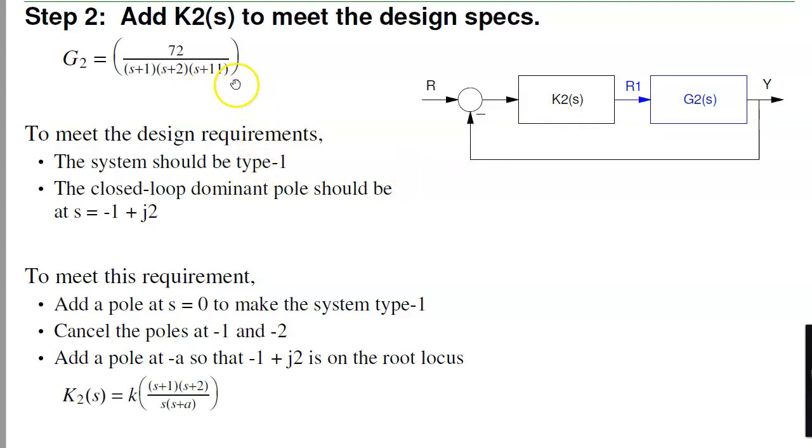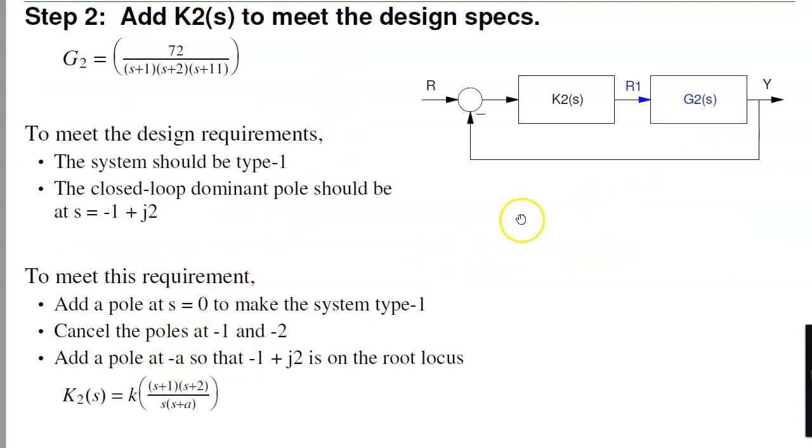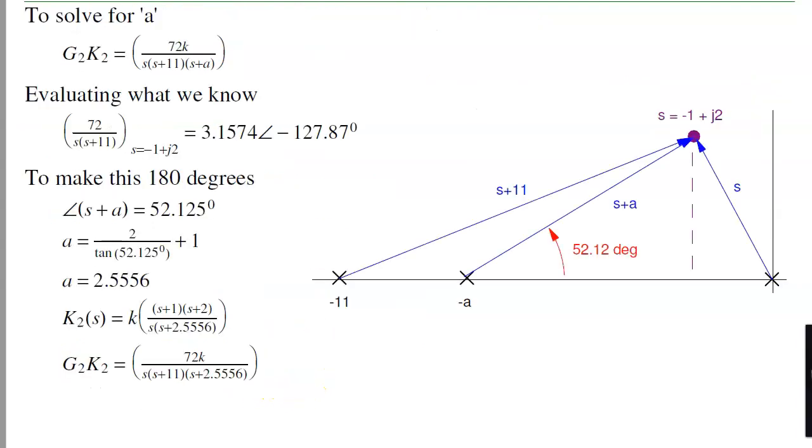So to do that, I'll look at the root locus. I want to put the dominant pole at minus 1 plus J2. I've got a pole at minus 1, minus 2, and minus 11. The pole at minus 11 is not too bad. The pole at minus 1 and minus 2 are causing trouble. So let's get rid of them. Pick K2 to cancel the poles at minus 1 and minus 2. Replace them with a pole at s equals 0. That makes the type 1. And the second pole, I slide that around until minus 1 plus J2 is on the root locus. Meaning I slide this pole around until the angles add up to 180 degrees at minus 1 plus J2.